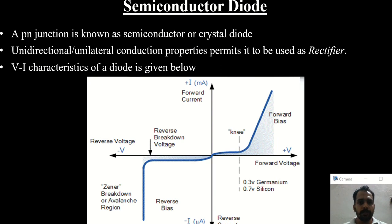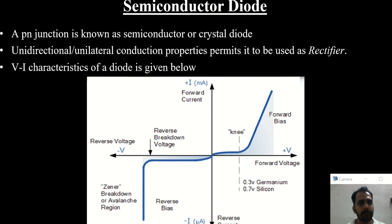A semiconductor diode is a p-n junction diode, otherwise called a crystal diode. A p-n junction means p-type and n-type regions are joined together, forming a depletion layer in between the two surfaces, and that region is called the p-n junction.